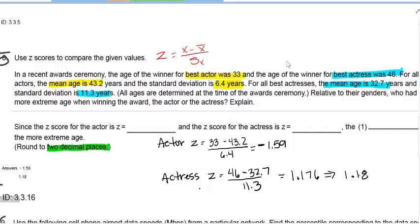We have two groups with different means and different standard deviations, but we can compare them. One of them has a z-score of negative 1.59, and the other has a z-score of positive 1.18.